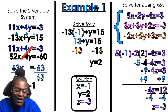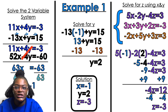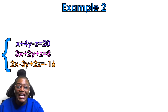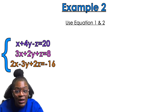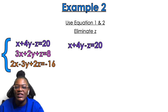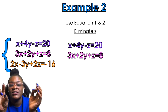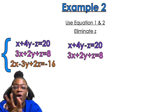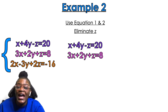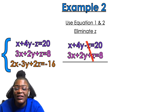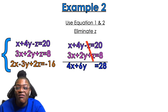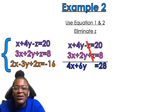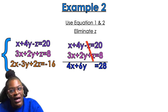Moving on to example number 2. Same rules apply. I'm going to use equation 1 and 2 to eliminate z. What I notice about the z's is I have a positive z and a negative z — so I already have opposites. So I can go right ahead and eliminate them. Adding what's left: x plus 3x gives me 4x, and 4y plus 2y equals 6y, equals 28 plus 8, which gives me 28 — wait, that gives me 36.